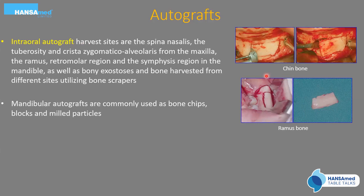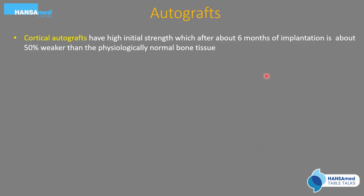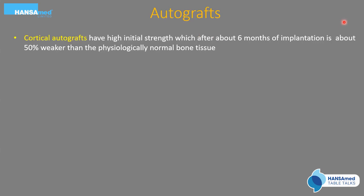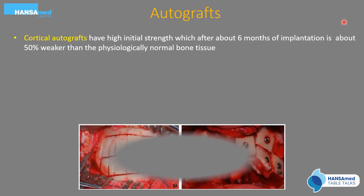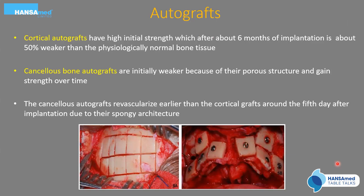Autografts are commonly used as chips, blocks, or small particles. For extraoral autografts, the iliac crest was most commonly used but is no longer common due to associated morbidity. Cortical autografts have high initial strength, but after about six months are approximately 50% weaker than normal bone. Cancellous bone autografts are initially weak due to their porous structure but gain strength over time. Cancellous autografts revascularize earlier than cortical grafts, around the fifth day after implantation, due to their spongy architecture.